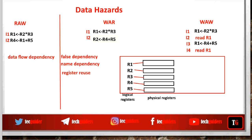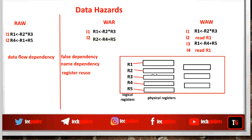In fact, there can be more physical registers available than logical ones. Why do we limit the number of logical registers? This reduces the number of bits required for operands within the instruction, which in turn reduces the number of bits required for the instruction, thereby reducing the code size. This has advantages, but on the other hand it leads to register reuse.